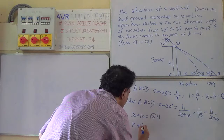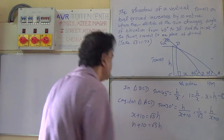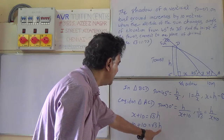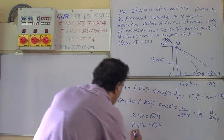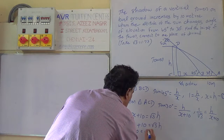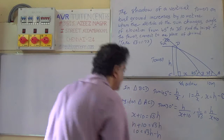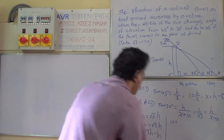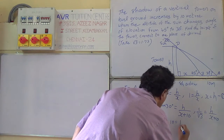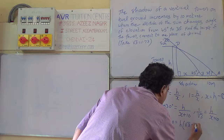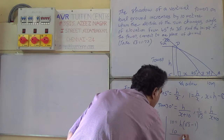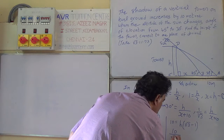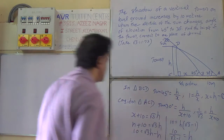H plus 10 equals root 3 H. Taking H to the right hand side, since root 3 H is greater than H, we get 10 equals root 3 H minus H. Taking H common: 10 equals H times root 3 minus 1. Therefore H equals 10 divided by root 3 minus 1.